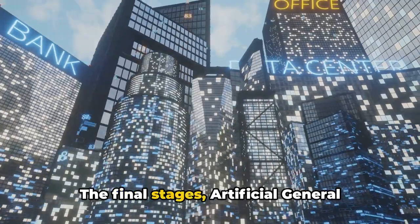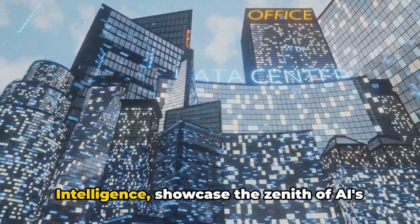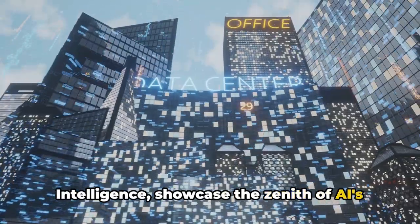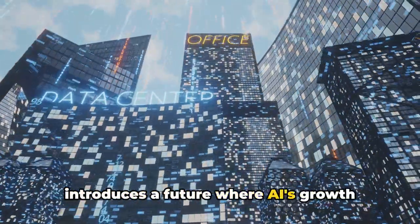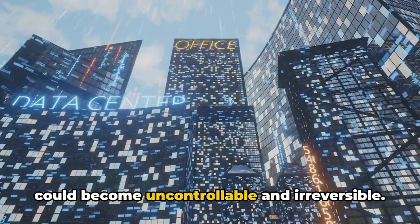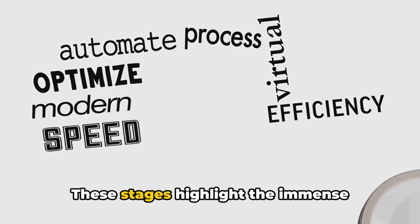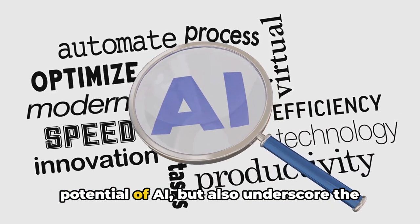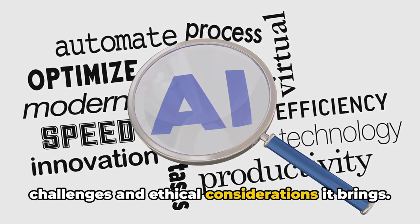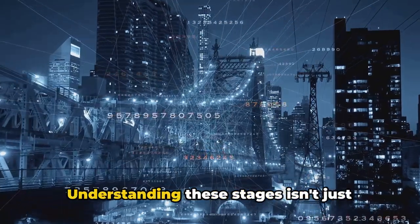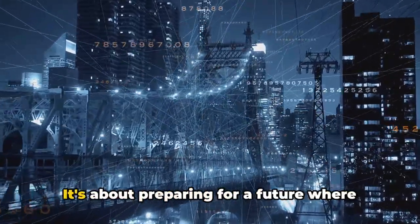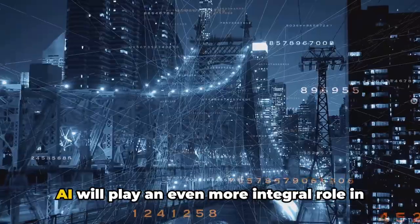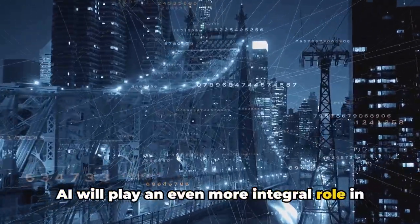The final stages—artificial general intelligence and artificial superintelligence—showcase the zenith of AI's potential, while the AI singularity introduces a future where AI's growth could become uncontrollable and irreversible. These stages highlight the immense potential of AI, but also underscore the challenges and ethical considerations it brings. Understanding these stages isn't just about appreciating AI's evolution, it's about preparing for a future where AI will play an even more integral role in our world.